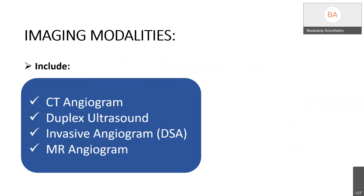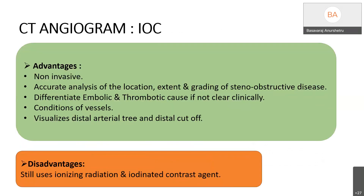Coming to imaging modalities: CT angiogram, duplex ultrasound, invasive angiogram, and MR angiogram. CT angiogram is the investigation of choice, with the main advantage of being non-invasive. It provides accurate analysis of the location, extent, and gradient of obstructive disease, helps differentiate between embolic and thrombotic cause, reveals the underlying condition of the vessels, and helps visualize the distal artery and distal cut-off. The disadvantage is that it uses ionizing radiation and ionic contrast agent, so it must be used carefully in patients with kidney disease.